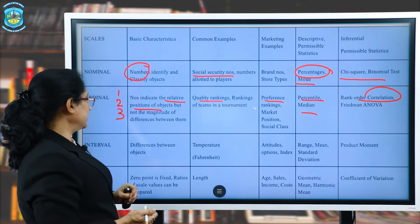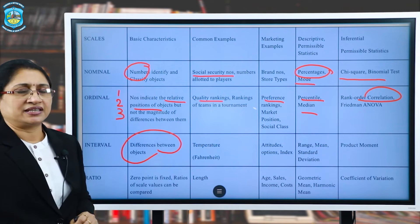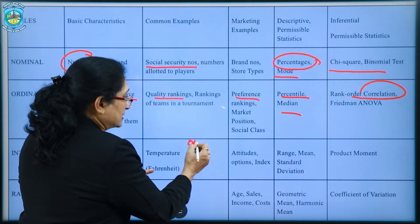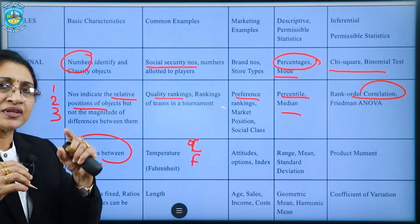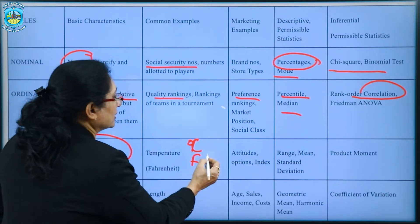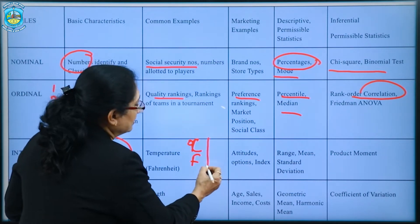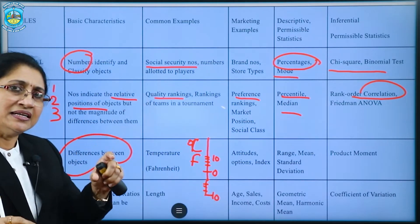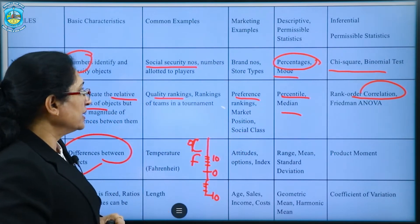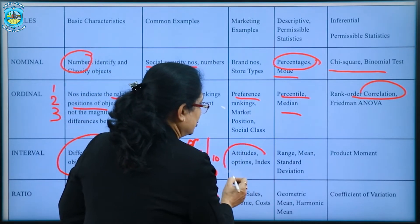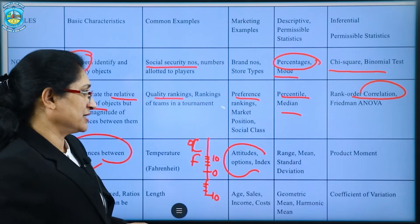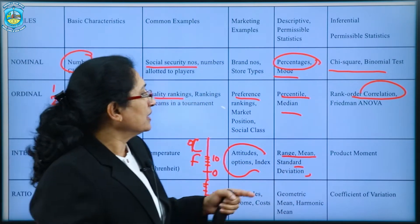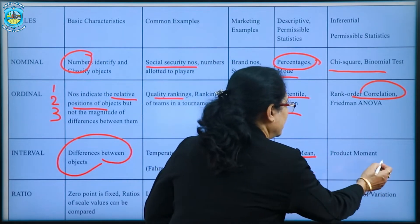In the interval scale, the difference between objects is what we measure. As in the case of degrees Celsius or Fahrenheit — there are equal intervals of temperature. The first indicator is zero, then equal divisions going up or down into negatives. Examples include attitude measurements or index measurements. Descriptive statistics used are range, median, and standard deviation; for inferential statistics, we use the product moment correlation.